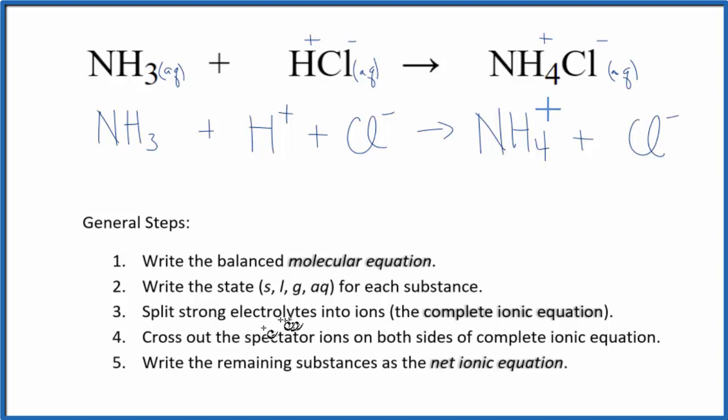At this point, we can cross out spectator ions. They're on both sides of this complete ionic equation. They haven't changed, so we're not interested in those. The only thing I see that's the same is the chloride ion. We have Cl minus here and then in the products again. So let's get rid of that. And this is the net ionic equation for NH3 plus HCl when we have aqueous ammonia and hydrochloric acid.